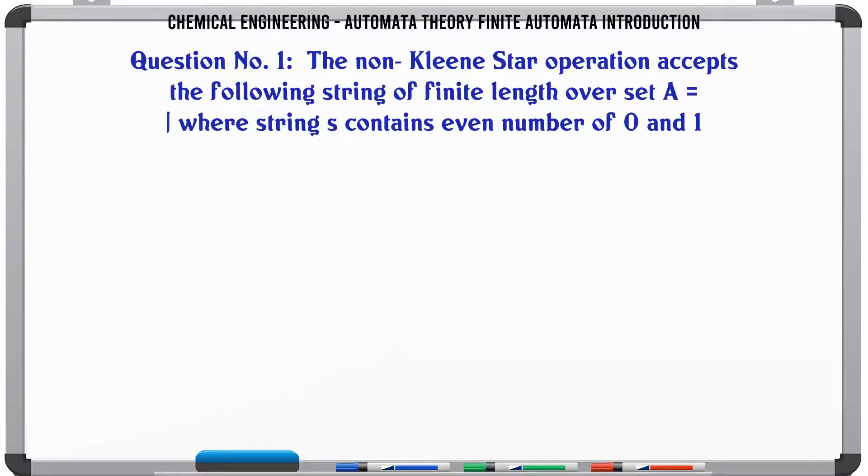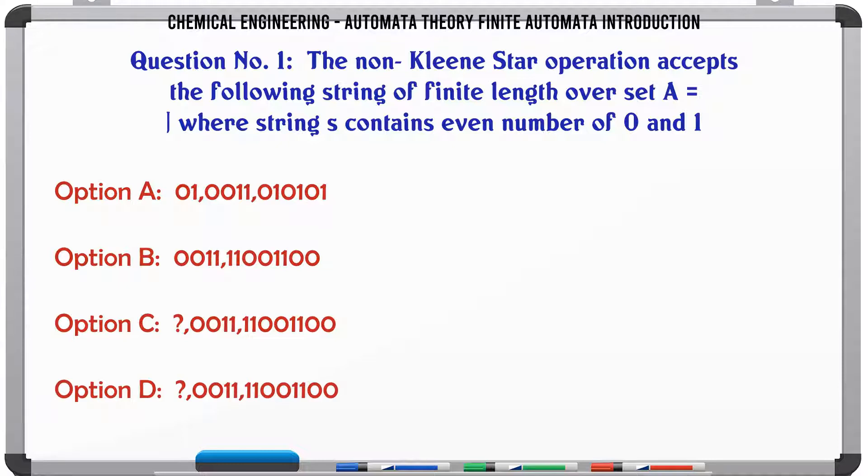The non-Kleene star operation accepts the following string of finite length over set A = {0,1}, where string S contains even number of 0 and 1.